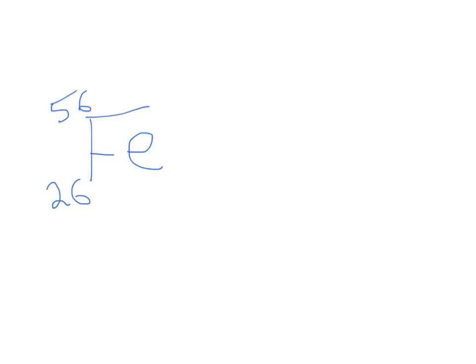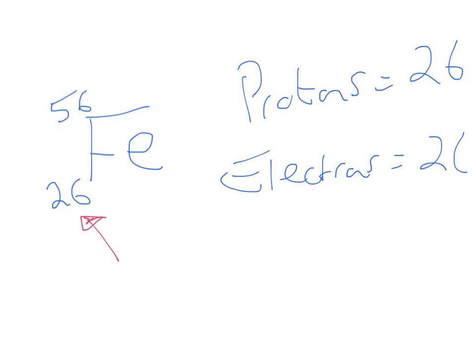So here's another atom. This is iron, obviously. Work out how many protons, neutrons, and electrons are in an atom of this iron. So number of protons is obviously 26. We just look at the lower number here. That tells us the number of protons. So because it's an atom, the number of electrons is also 26. Number of neutrons, well, the mass number is 56. The proton number or atomic number is 26. So it's 56 minus 26, which equals 30.